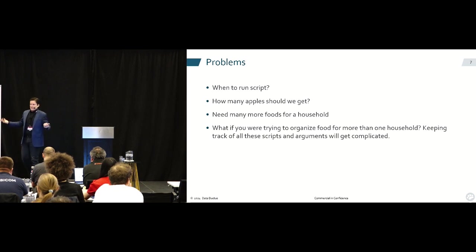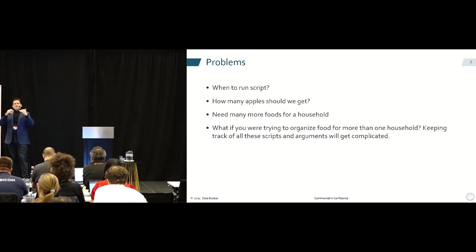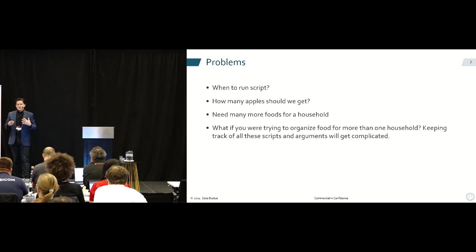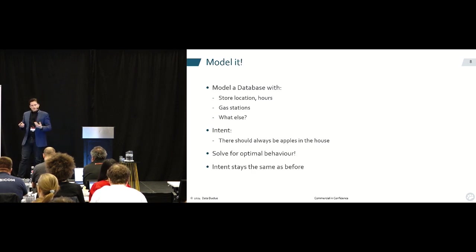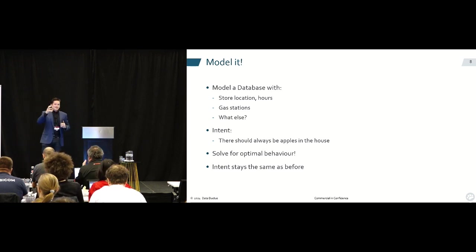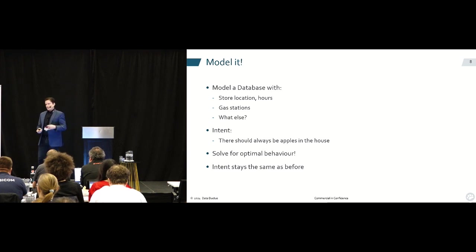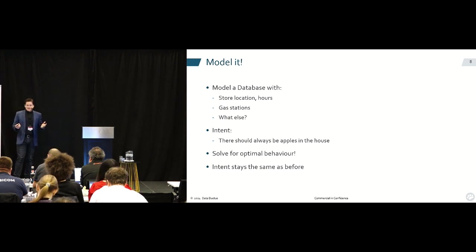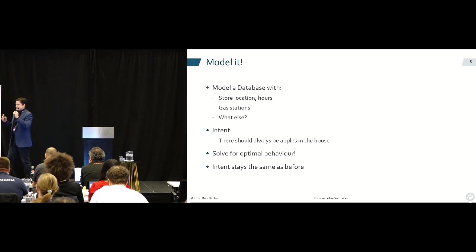What about if you're a person who eats more foods than just apples? You might want to also have an intention to get more than just the apples. As you add more and more requirements, your number of side effects could get larger, and the complexity of the interface to calling this script is going to get higher. So if we're going to use an intent-oriented system, we can take a lot of the complexity and push it into a more static model. We can specify a simple intent and then have an optimal operation to fulfill the intent — modeling the database with store location, hours, gas stations, and any other needed information.